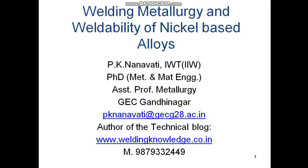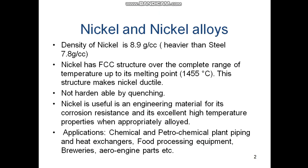Nickel material has a density of 8.9 gram per cubic centimeter — it is slightly heavier than steel. Nickel has a face-centered cubic structure over the complete range of temperature up to its melting point of 1455 degrees Celsius. This structure gives nickel its ductility; the gamma FCC structure provides sufficient ductility to the material.